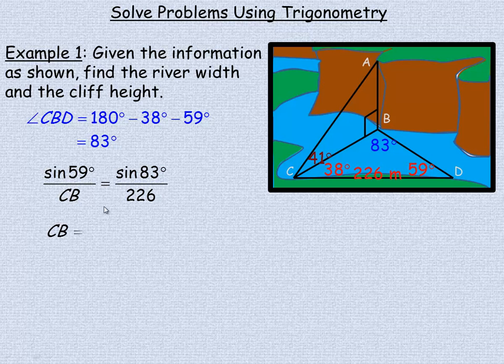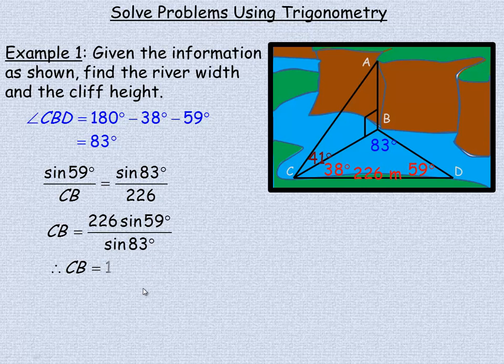We rearrange algebraically to solve for CB. Some people call this cross multiplying. So CB is the product of the two things in the diagonal that you know, which are the 226 and the sine of 59, divided by the other quantity, sine of 83. That calculation will give us the CB distance, the distance across the river here, which is 195 meters.